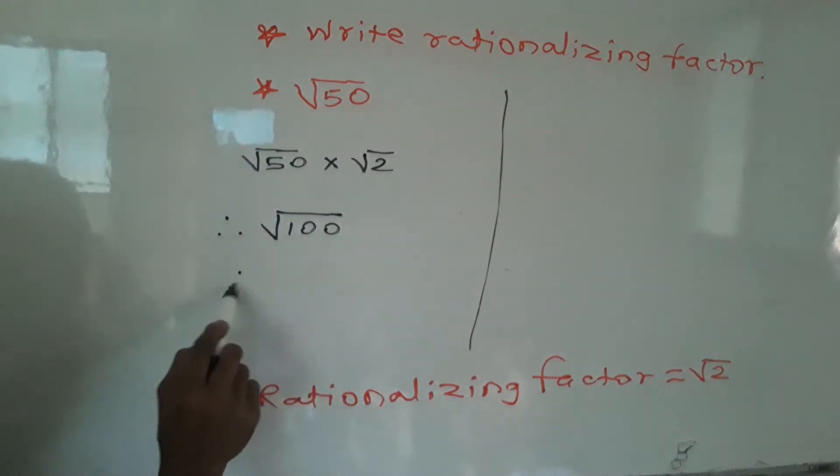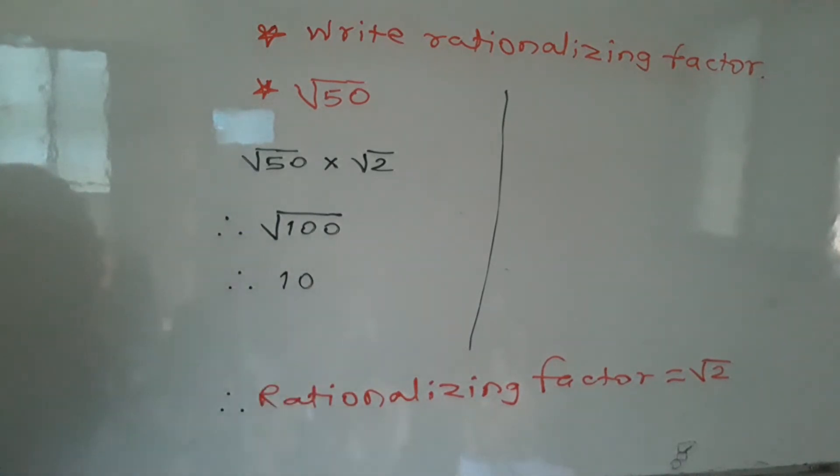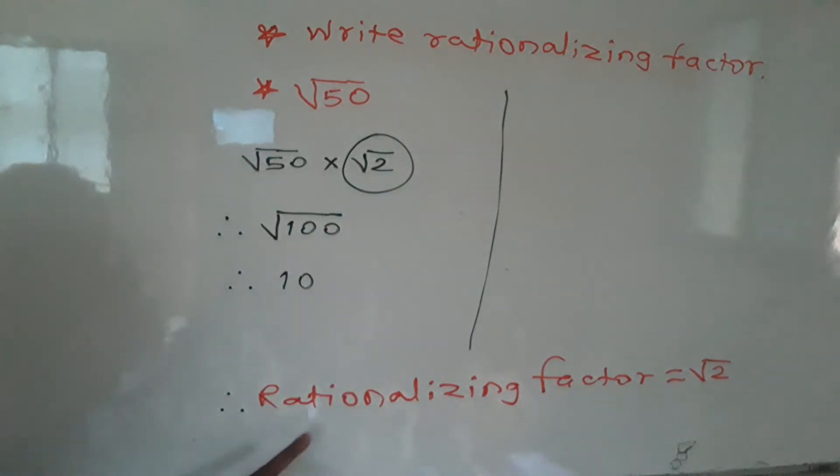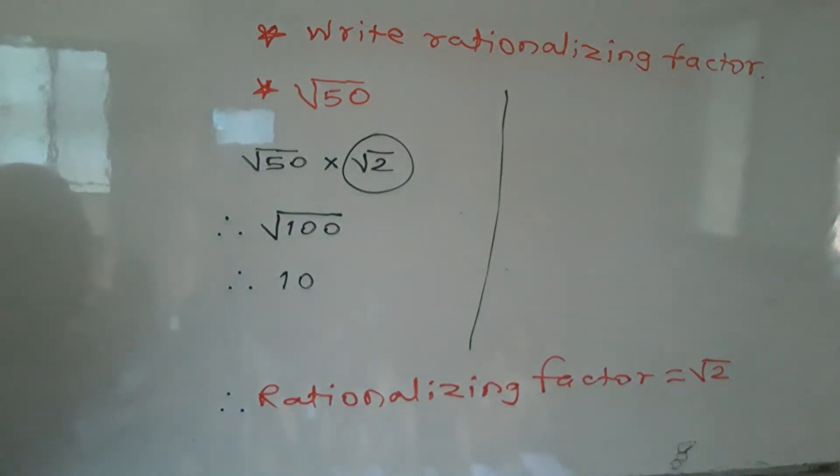And square root of 100 means 100 is a perfect square. And this is the square of which number? 10. Means our answer, that is, the rationalizing factor is equal to square root of 2.